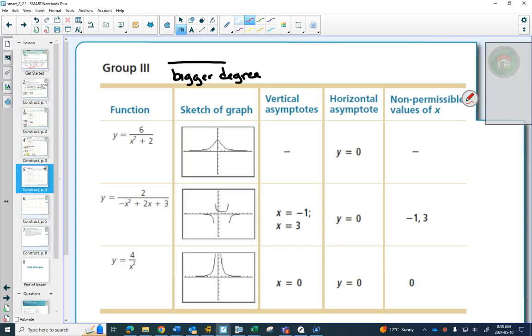So unlike a logarithmic question, where you know the basic shape of a log graph, and it doesn't change, these graphs can look like a whole bunch of different things, but the rules don't change when we get to how do we graph them. So one thing we're going to notice in this group is that if the degree is bigger on the bottom, there's a horizontal asymptote, and it's always at y equals 0.